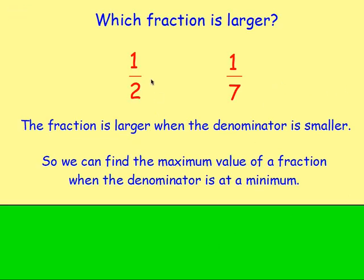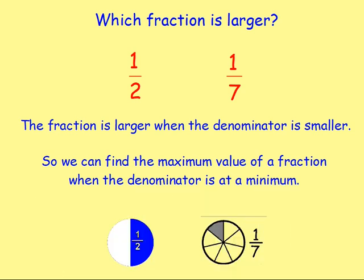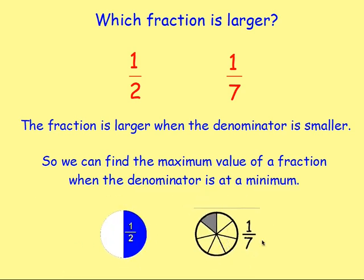Which fraction is larger — a half or one seventh? If you had a cake, half a cake is going to be bigger than one seventh of a cake. So a fraction is larger when the denominator is smaller. The smaller the denominator, the larger the value you get out. So you can find the maximum value of a fraction when the denominator is at a minimum.